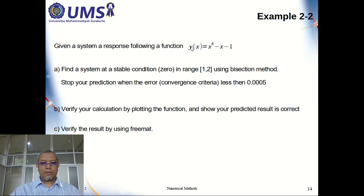So we take a function y(x) equals to x power of 6 minus x minus 1. And you are required to find the stable condition or zero value on that function in the range of 1 and 2 by using bisection method.